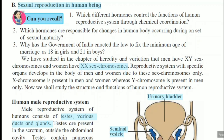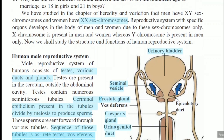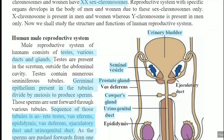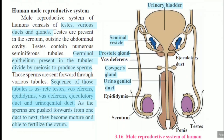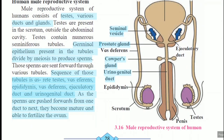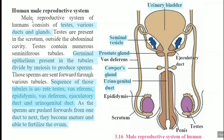For understanding the concept of gamete formation and fertilization, first of all we have to understand the structure of the reproductive system of male and female. So, the next point is the human male reproductive system. Observe diagram 3.16, the male reproductive system of human.